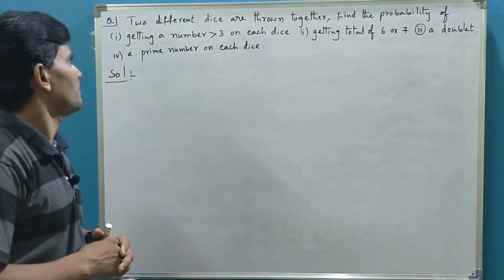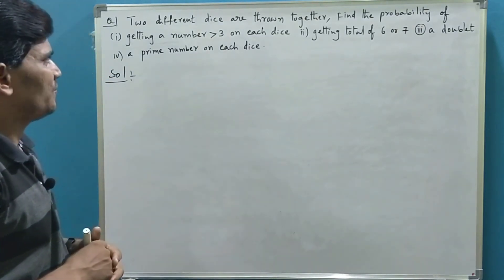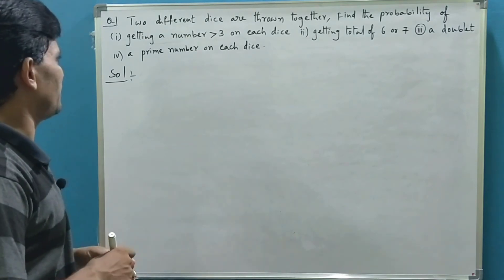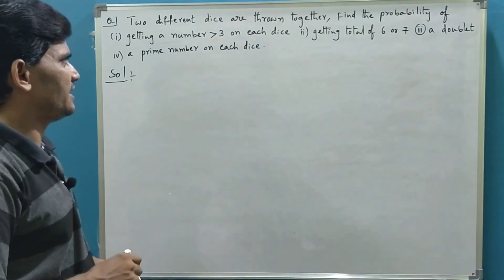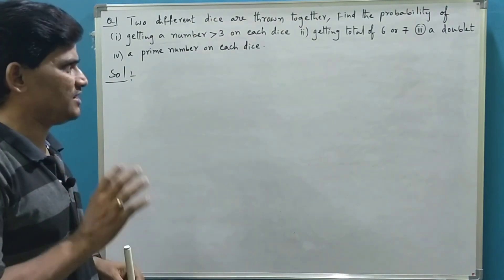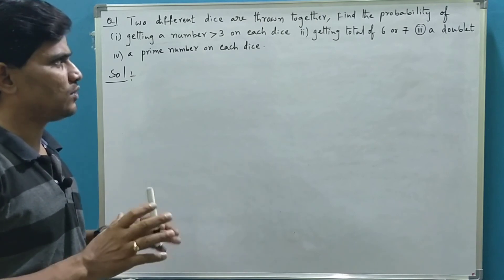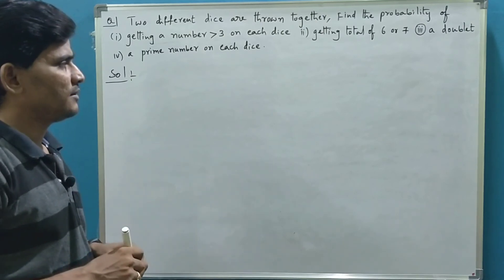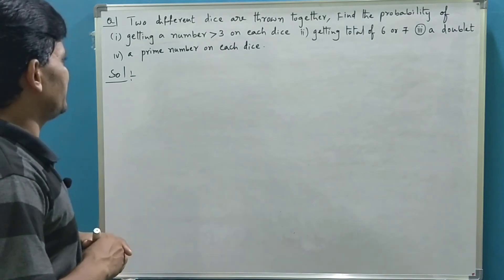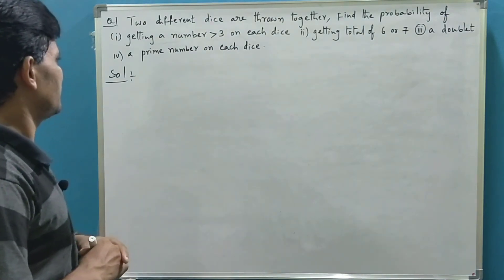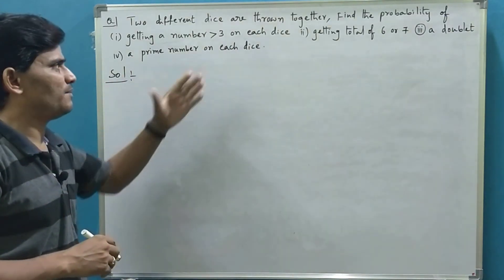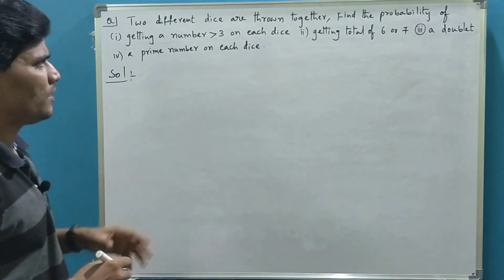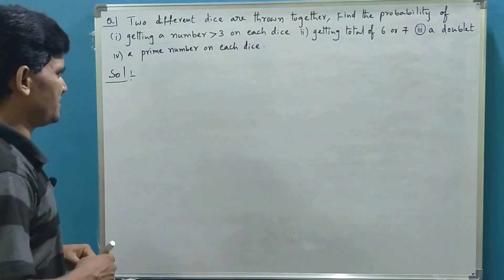Let us see the problem. Two different dice are thrown together. Find the probability of getting a number greater than 3 on each dice, getting a total of 6 or 7, the third one is getting a doublet, and the fourth one is getting a prime number on each dice. Let us see what the probabilities of these events are.